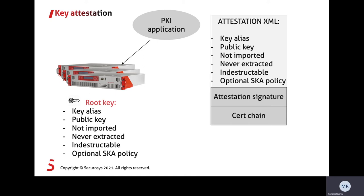In the key attestation, the root key has attributes such as a key name, the public key, flags indicating it has never been extracted, that it is indestructible, and optionally the smart key attribute policies. Via the application — either through the Java API or the REST API — you can request the attestation. You then receive an XML with all the attributes, signed with the attestation key from our HSM, along with a full certificate chain to validate the signature and ensure there is no man in the middle. If you want more details on how that works, there is another video about audit topics.